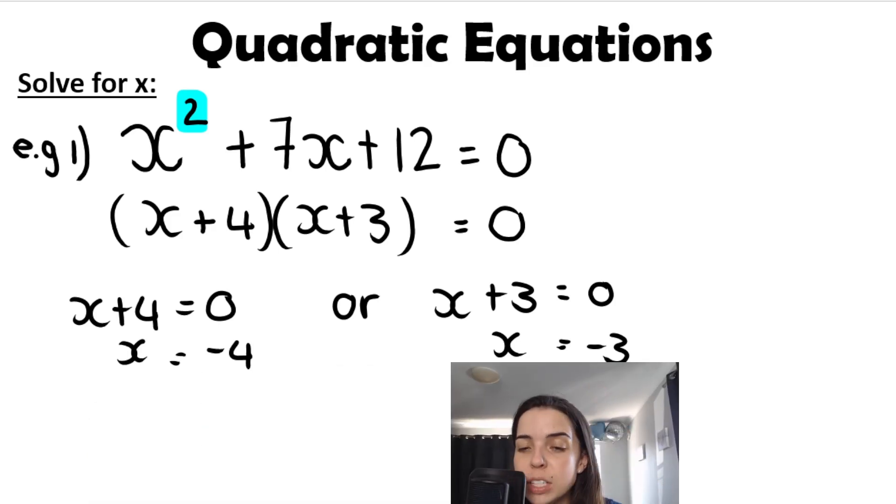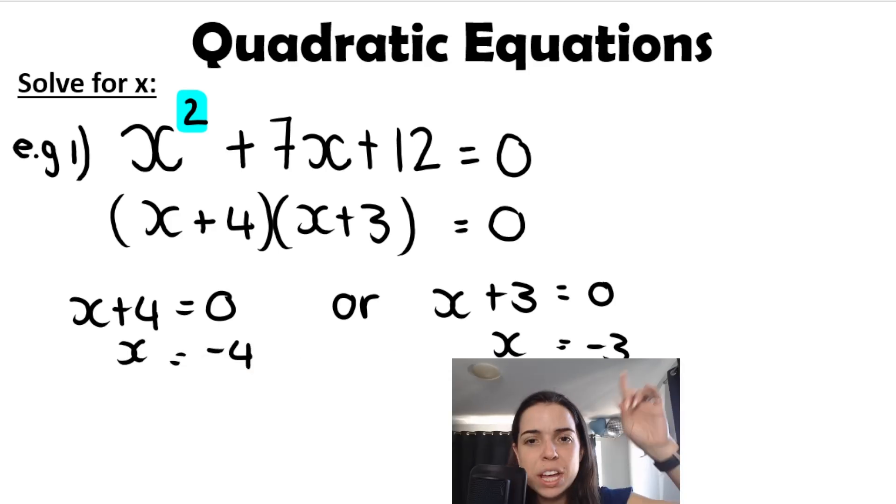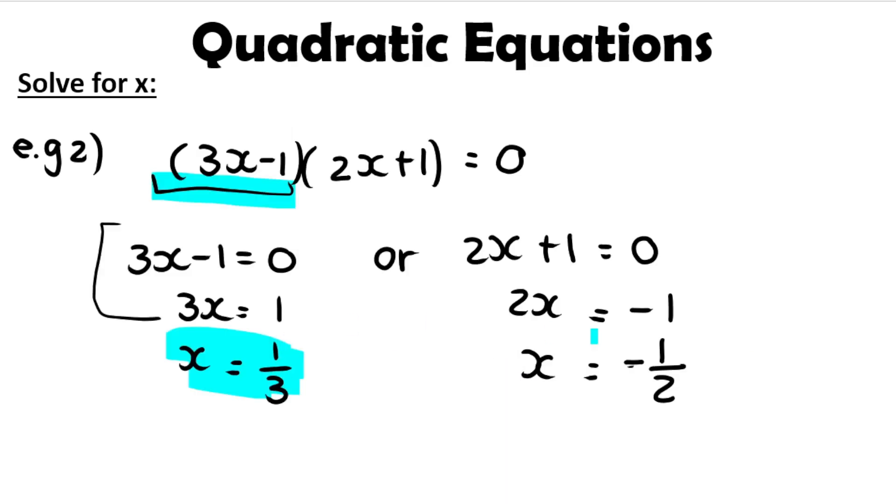In the previous video, our solutions were always rational numbers: negative 4, negative 3, a third, negative 1 half. Rational numbers can be written as a fraction in the form of a over b. The bottom of the fraction can't be zero because then it would be undefined.